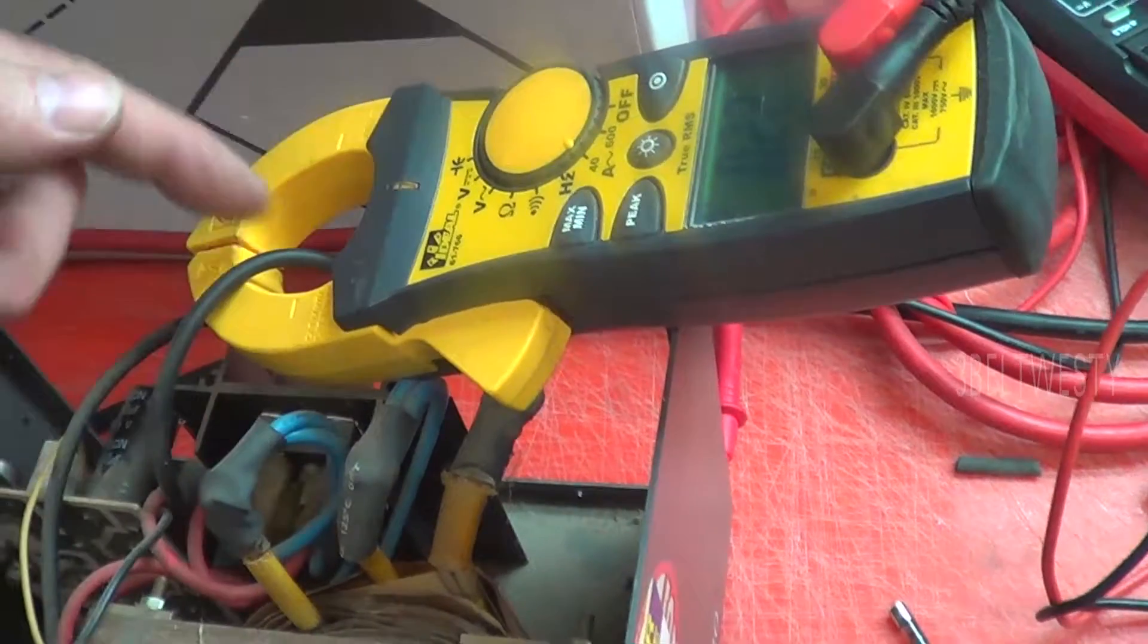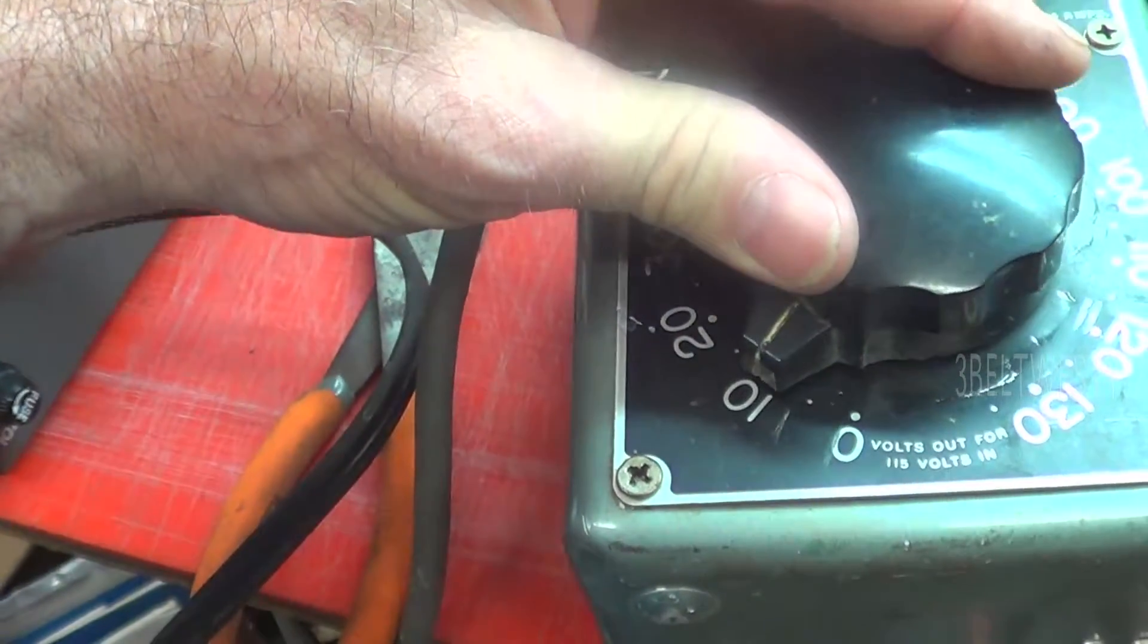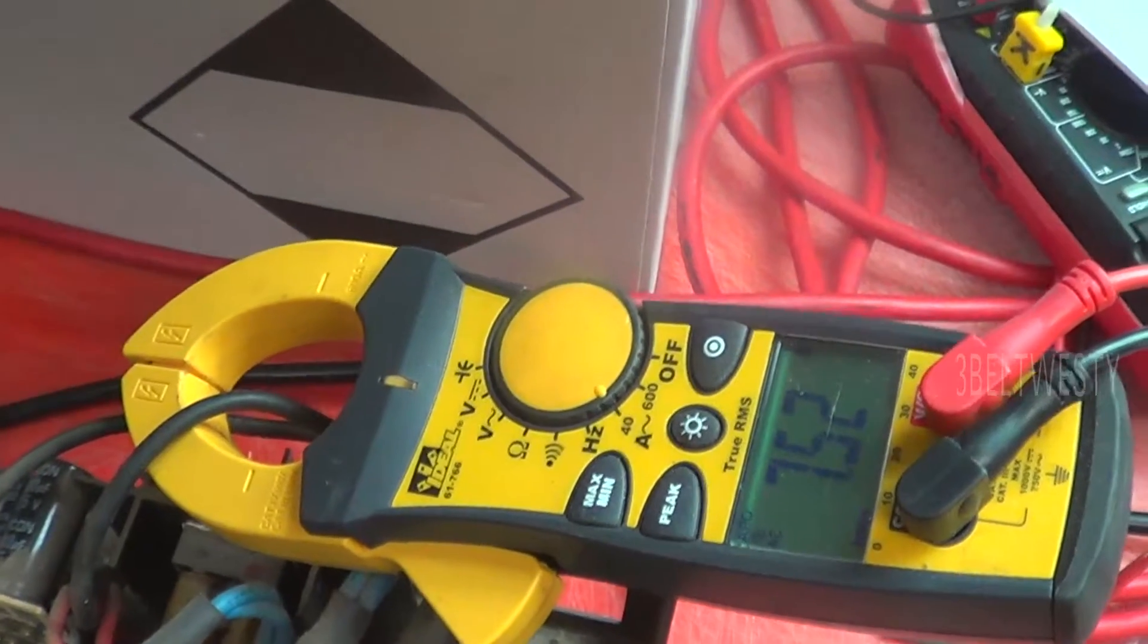I've got the current probe on the center tap here to the bridge, one of them. I'm going to go through here and fire this up. And lo and behold, we've got about 8 amps here.